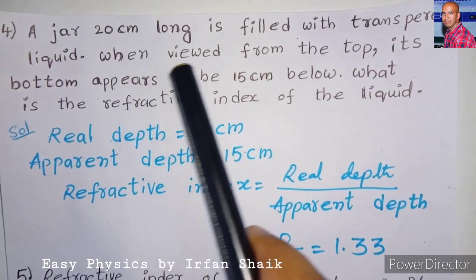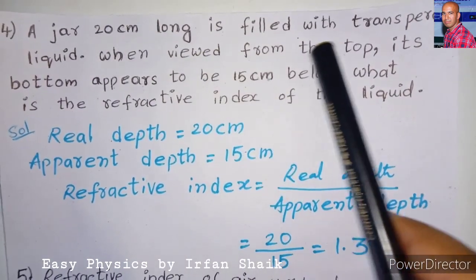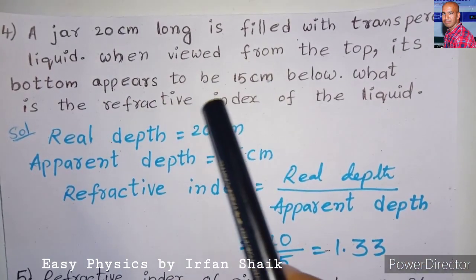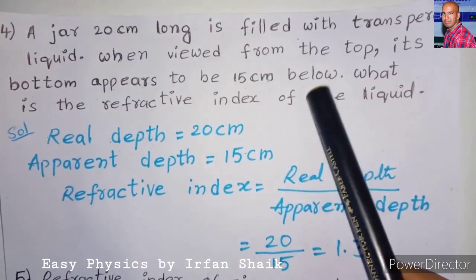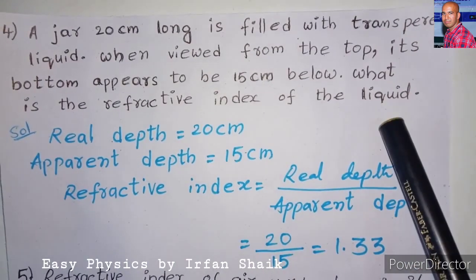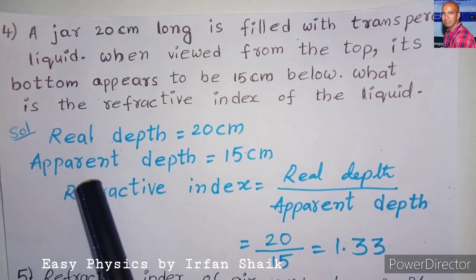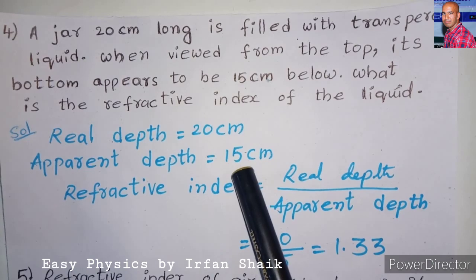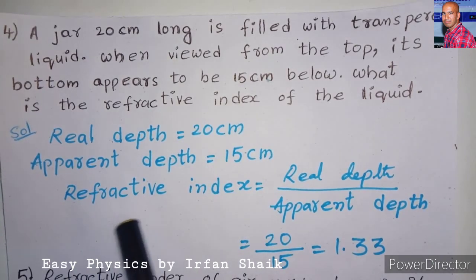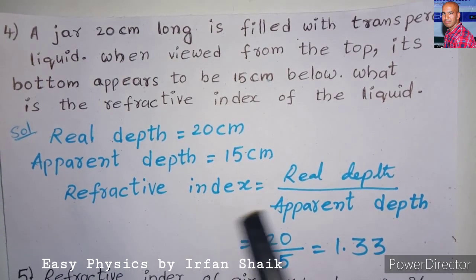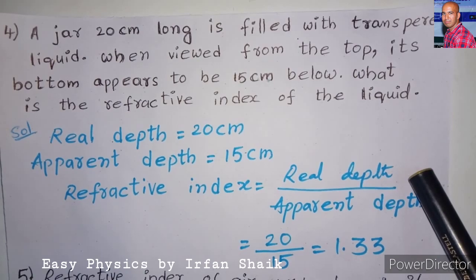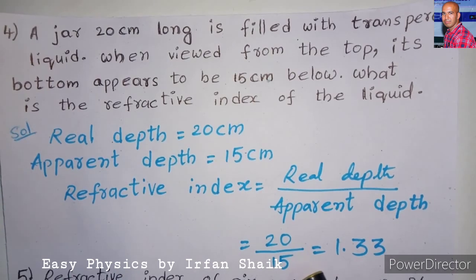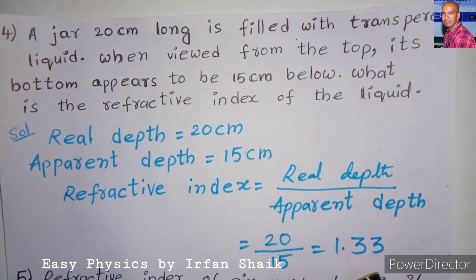A jar 20 cm long is filled with a transparent liquid. When viewed from the top, its bottom appears to be 15 cm below. The real depth is 20 cm and the apparent depth is 15 cm. Using the formula refractive index = real depth / apparent depth, substituting 20/15, we get the answer as 1.33.